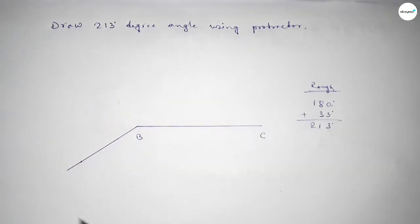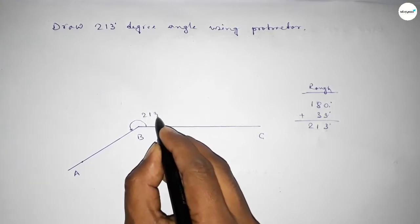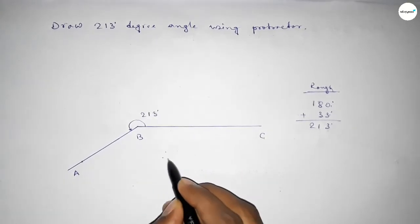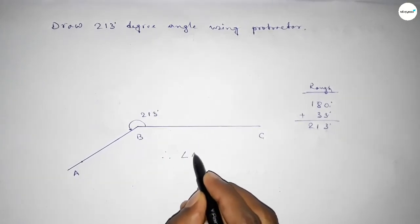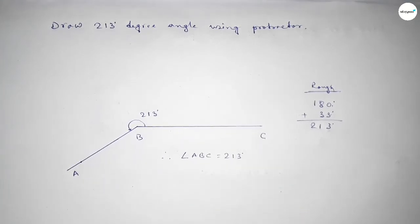So angle ABC is 213-degree angle. Therefore, angle ABC equals 213 degrees. That's all, thanks for watching!